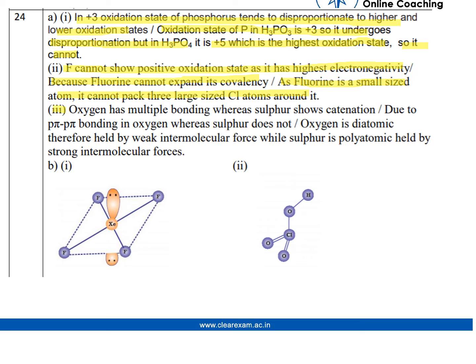For the third part, it was given dioxygen is a gas while sulfur is a solid at room temperature. The reason is: oxygen has multiple bonding whereas sulfur shows catenation. Due to pπ-pπ bonding in oxygen whereas sulfur does not. Oxygen is diatomic, therefore held by weak intermolecular force, while sulfur is polyatomic held by strong intermolecular forces.